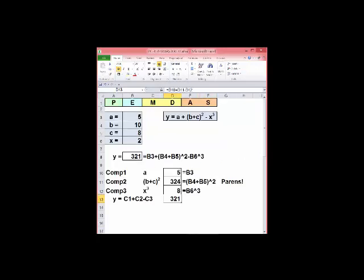Let's look at a little bit more involved example. Y is equal to a plus b plus c quantity squared minus x cubed. You can enter this in one cell, being very careful to use parens to define your order. Note that parens are required for the second component, the quantity squared. Alternately, when you have a very complicated equation with several components, it can be wise to break it into parts, calculate each separately, and then combine them.